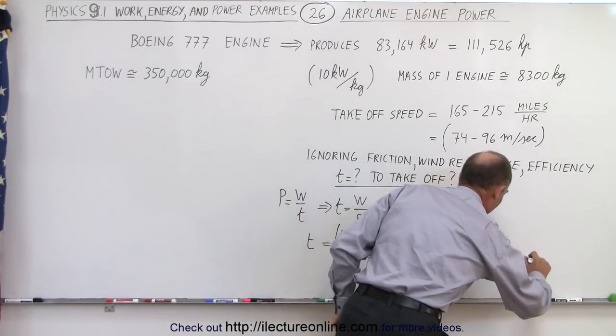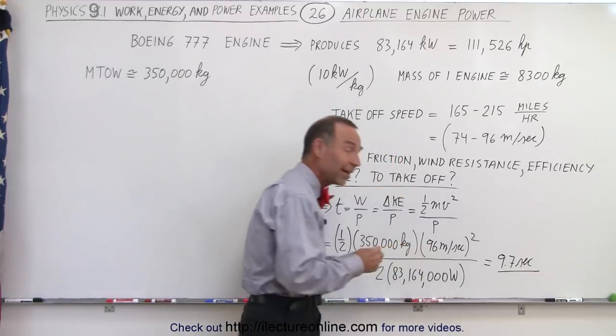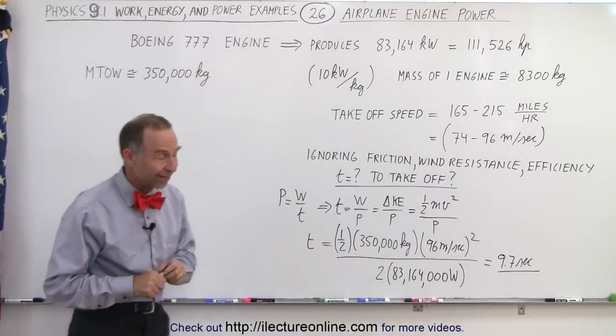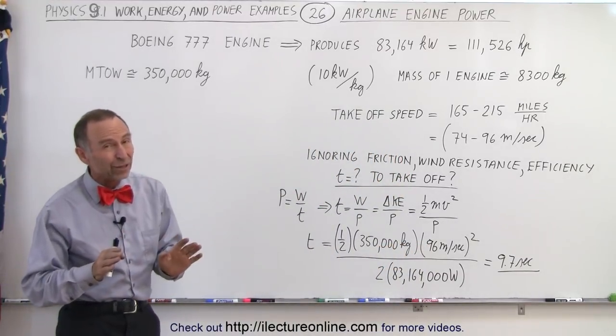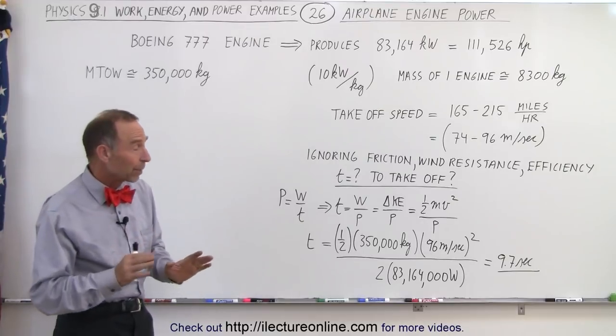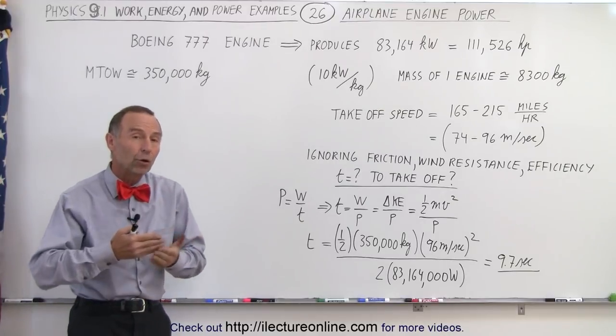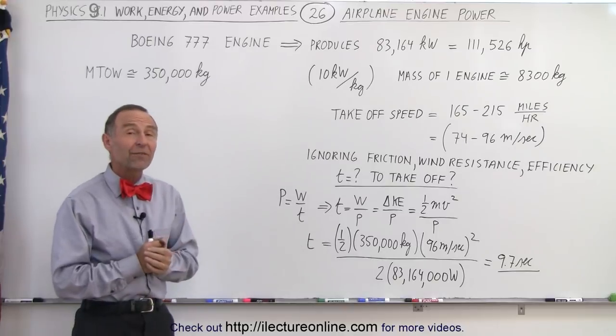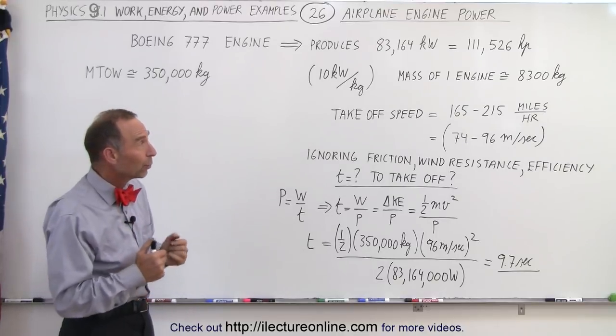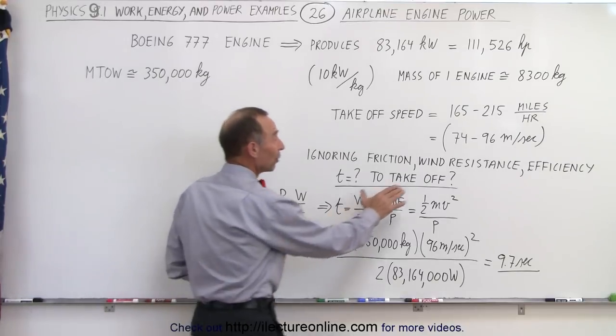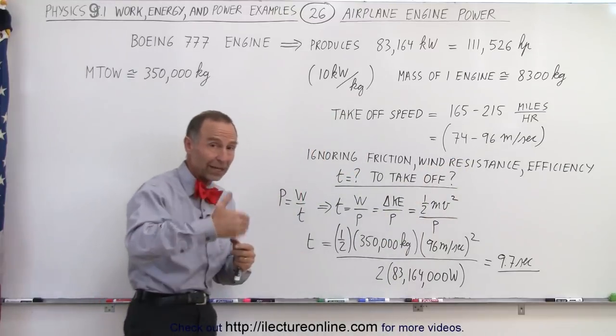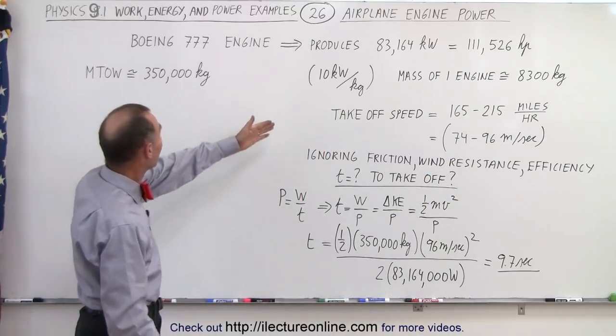9.7 seconds. Now we know that those airplanes do not take off in about 10 seconds. They take about 30 to about 45 seconds depending upon whether or not they're lightly loaded or fully loaded. 9.7 seconds—why is the number so much smaller? Well, because we're definitely ignoring wind resistance, and as those planes begin to gain speeds of 200 miles per hour, there's a lot of wind resistance.